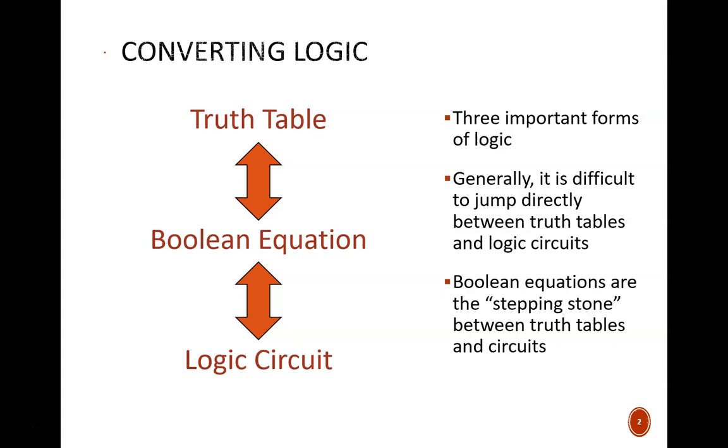Over the next couple videos we'll scan through various methods of converting logic forms. There are three main ways we systematically represent logic: truth tables, Boolean equations, and logic circuits. Each of these shows in its own way how input variables lead to an output result. Each has certain advantages over the others.